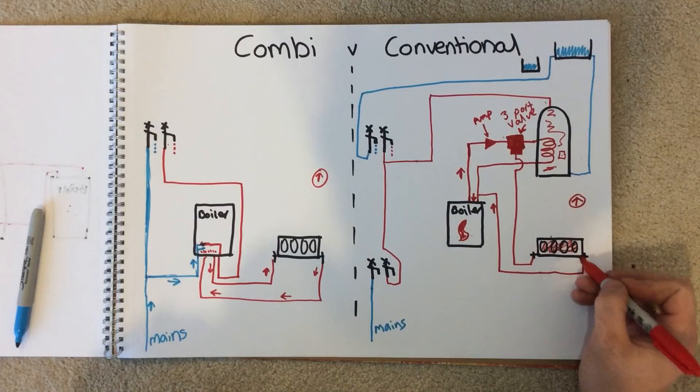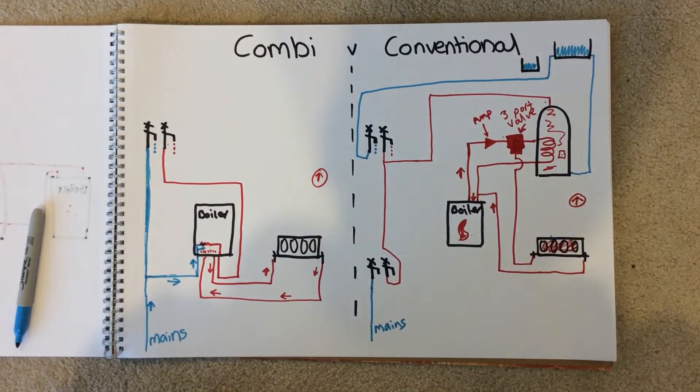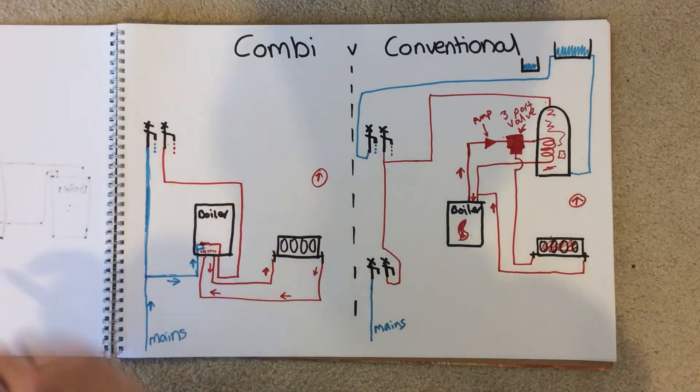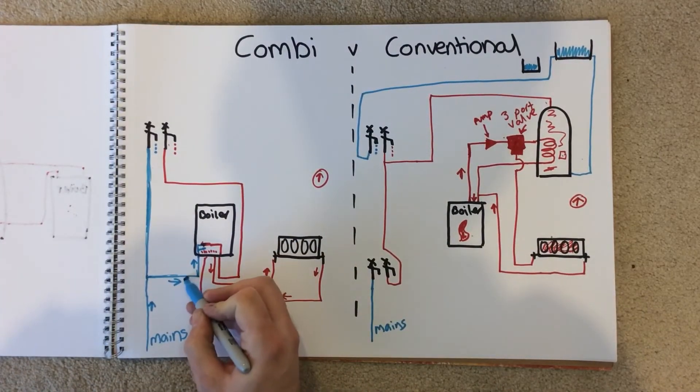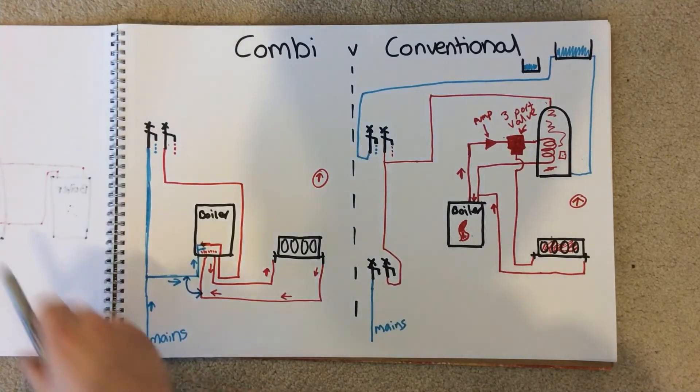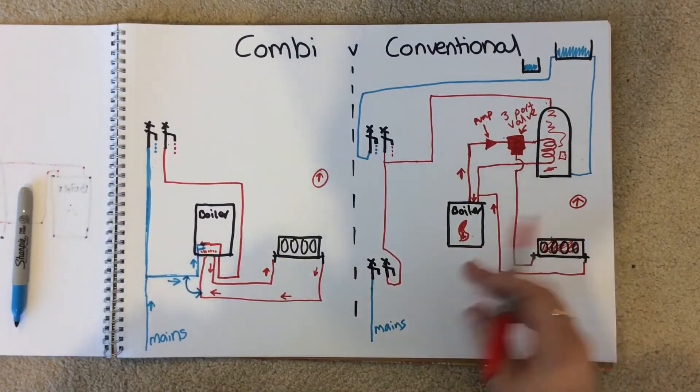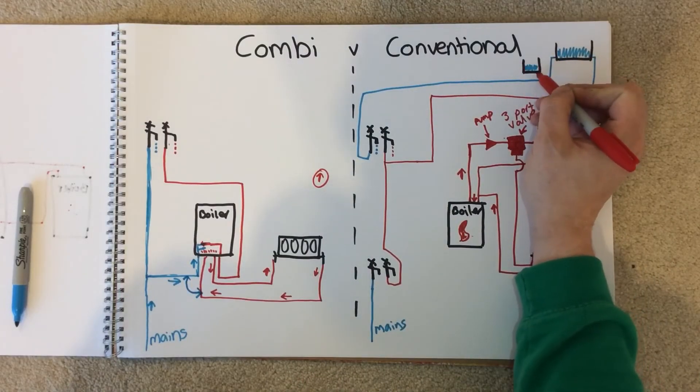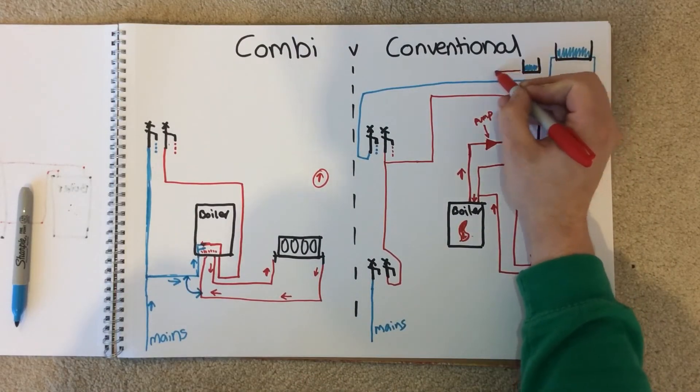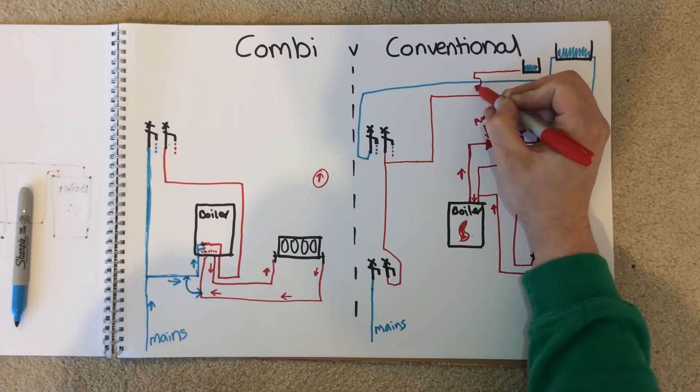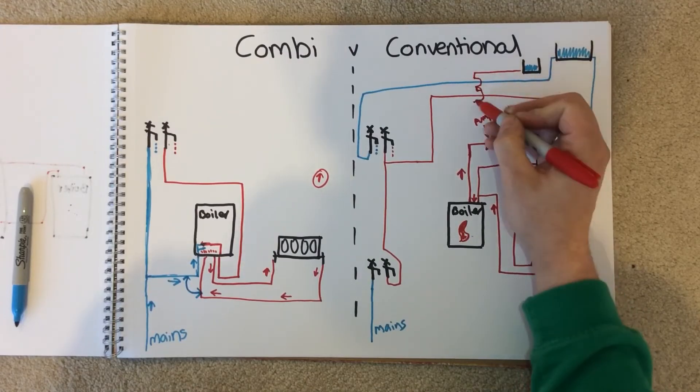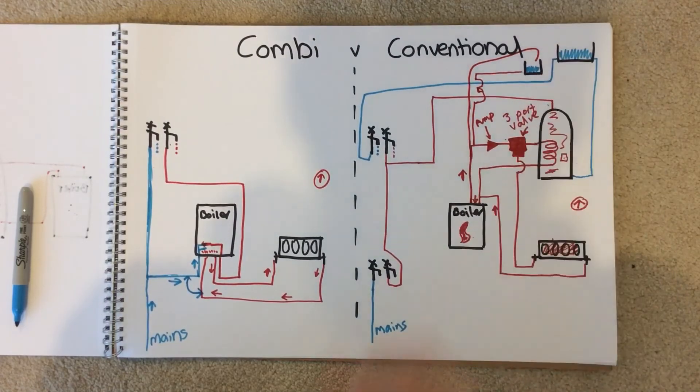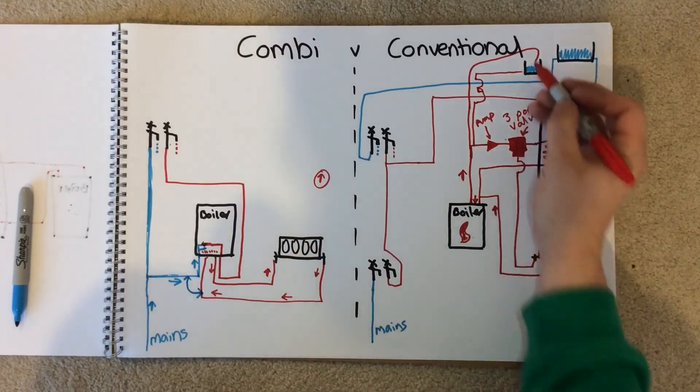The boiler on the combi is fed via the mains - that's how it's filled up. With the conventional system, you'll usually find a little tank in your loft. This will come down - a few pipes in the way just for the sake of this drawing - and be fed into the system. It'll also have a vent as well. I'm trying not to get too technical on that.